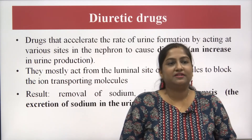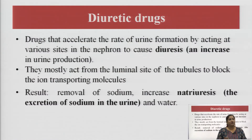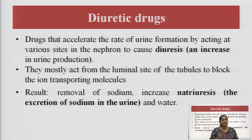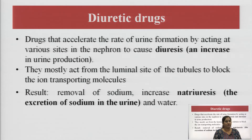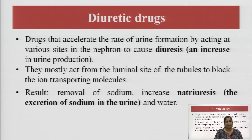What are diuretics? Diuretic drugs are those which generally accelerate the rate of urine formation to treat many diseases — basically to treat hypertension. It is required to excrete out all the unnecessary metabolites and ions from our body through the urine. The most important ion to be excreted is sodium, and the term used for excretion of sodium in urine is called natriuresis. The drugs that accelerate the rate of urine formation by acting on the various sites of the nephron are called diuretics.